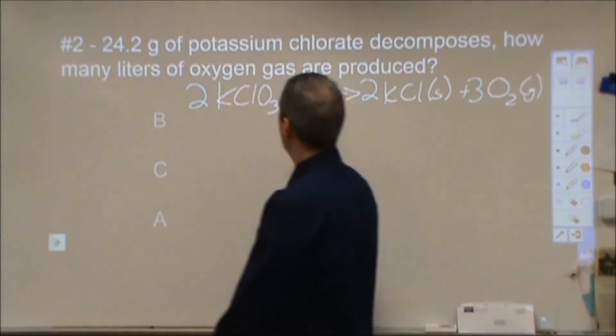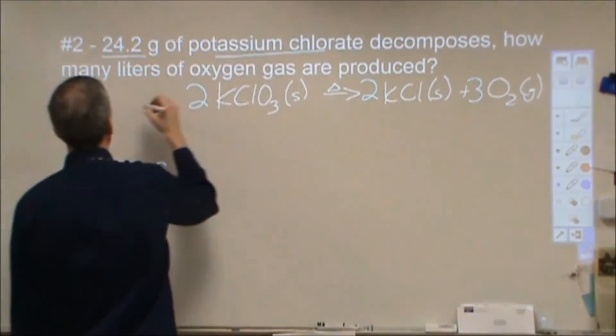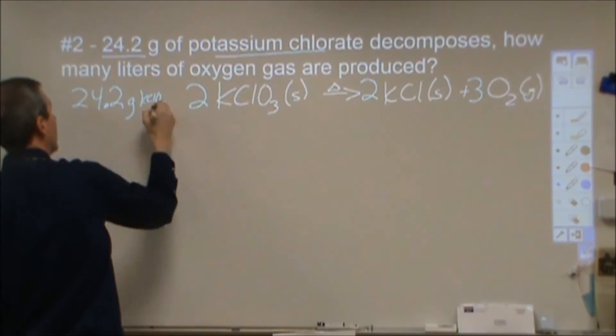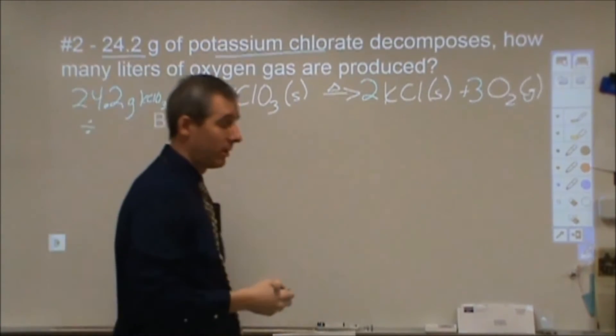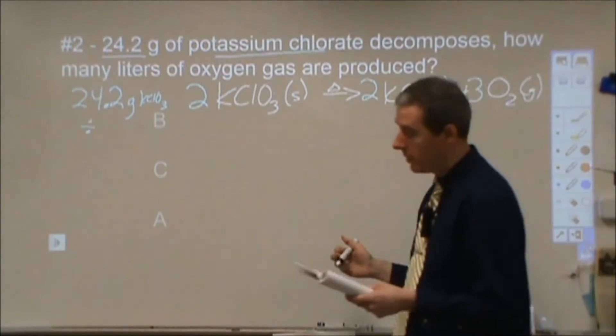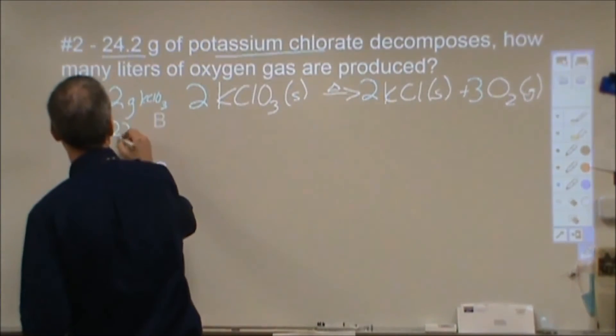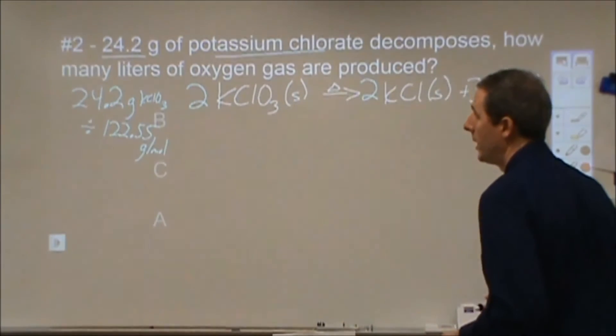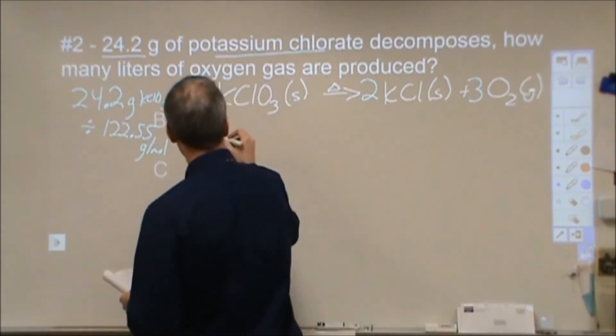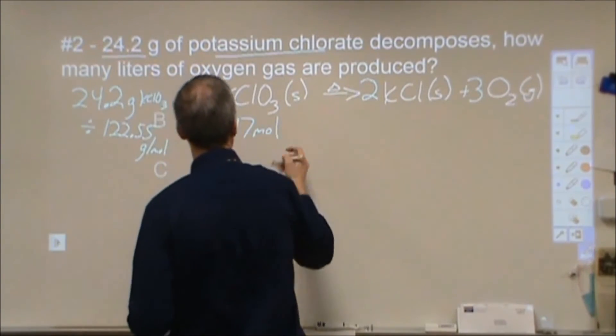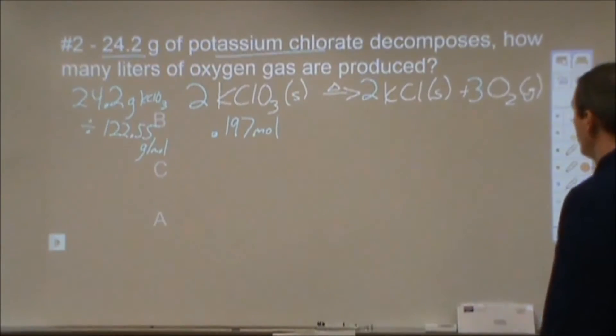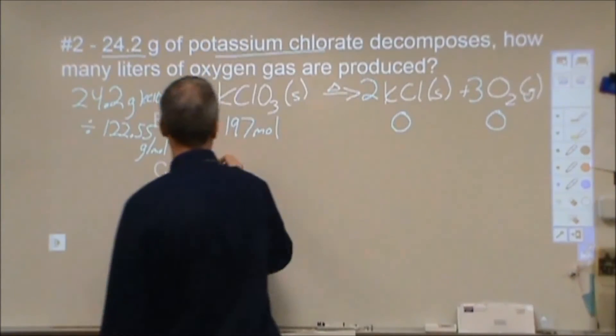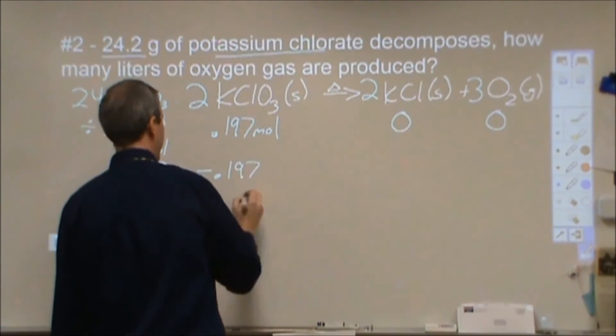It tells us we have 24.2 grams of potassium chlorate. That's our only reactant in this case. So 24.2 grams of KClO3, we're going to divide that by its molar mass to change that into moles. The molar mass is 122.55 grams per mole. We've got three sig figs to start, so we're going to end up with a three sig fig answer. This comes out to be 0.197 moles of potassium chlorate.